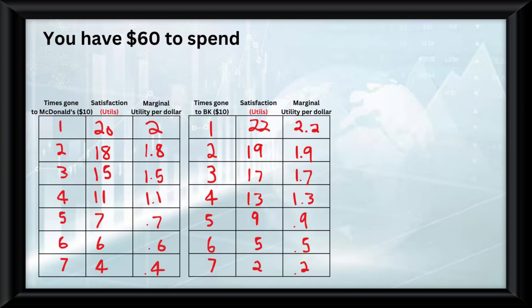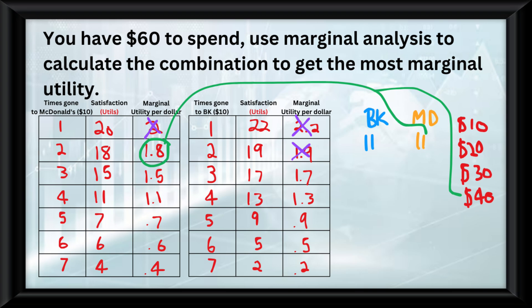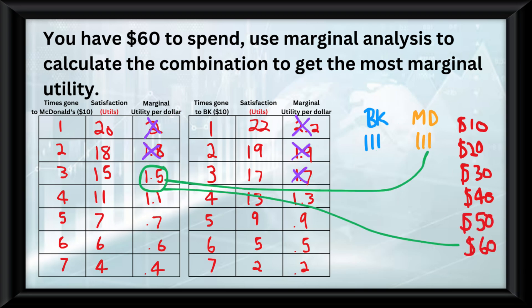Now say we only have $60 to spend and it was asking us to use marginal analysis to calculate the combination of the amount of times I should do both things. The way to do this is to keep picking whichever one has the highest marginal utility per dollar until you reach the dollar amount, which in this case is $60.